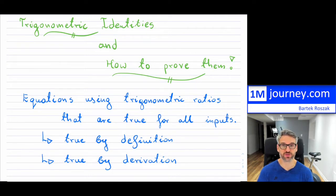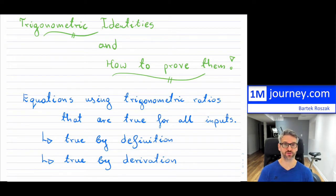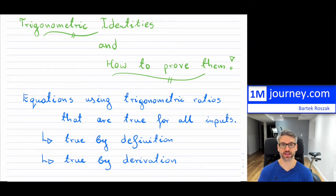What are these trigonometric identities in general? What do they mean? Basically, they're just equations of trigonometric ratios where they're true for all the values of the angles that are provided or the inputs that are provided. Now, some of them are true completely by definition because we have defined trigonometric ratios.